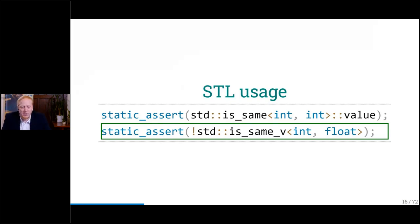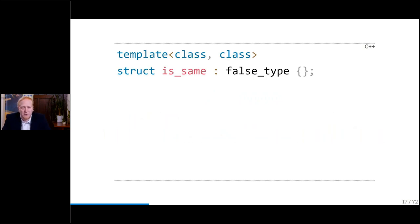You may not have used it, but the question is: how would one implement this kind of meta function? The easiest way is to create a struct `is_same` and just inherit from `false_type`. `false_type` is just a type that when converted to a bool is false — it represents the value of false in the type system. We have 50% already done because half of the types are not equal.